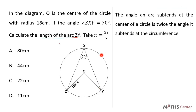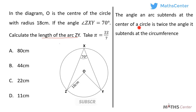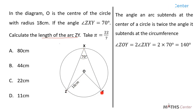One of the theorems of a circle is that the angle an arc subtends at the center of the circle is twice the angle it subtends at the circumference. So the angle that arc ZY subtends at the center is 2 times the angle that arc ZY subtends at the circumference. Therefore, angle ZOY is equal to 2 times angle ZXY. Angle ZXY is 70 degrees, so angle ZOY equals 2 times 70 degrees, giving us 140 degrees.